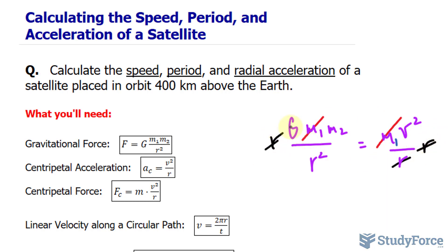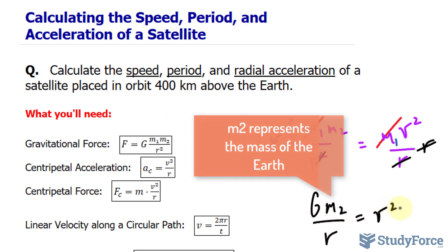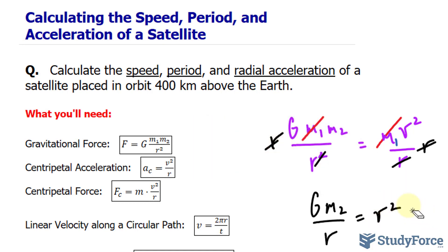This r and this r will cancel out. And this r and one of these r's will cancel out, leaving us with a single r in the denominator position. So I have G times m₂ over r equals v squared, and we square root both sides to get rid of that exponent 2.